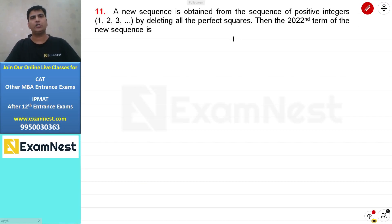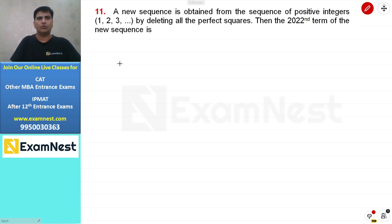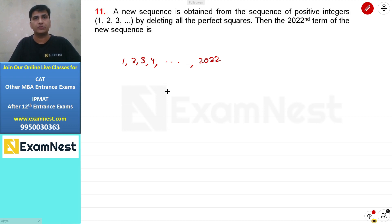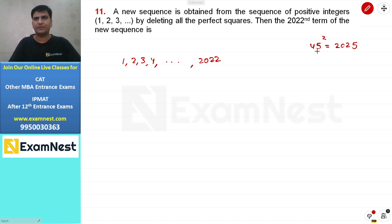Look at this question: a new sequence is obtained from the sequence of positive integers 1, 2, 3, and so on by deleting all the perfect squares. Then the 2022nd term of the new sequence is what? The sequence is 1, 2, 3, 4, and so on. If I want the 2022nd term, we need to count how many perfect squares exist. 5 squared is 25, which is number 25.